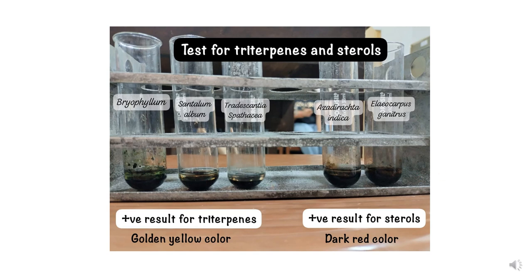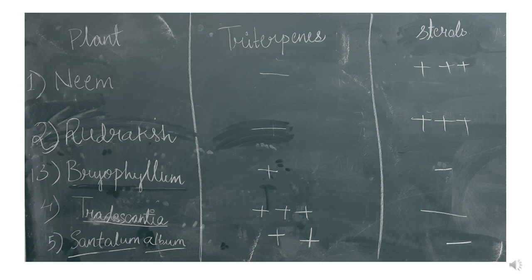When recording this practical, make a table with the plant name in the first column, then indicate the color observed, and use a positive or negative sign for the presence or absence of each phytochemical. I hope you have understood the practicals. Thank you, students, and we will meet in the next lecture.